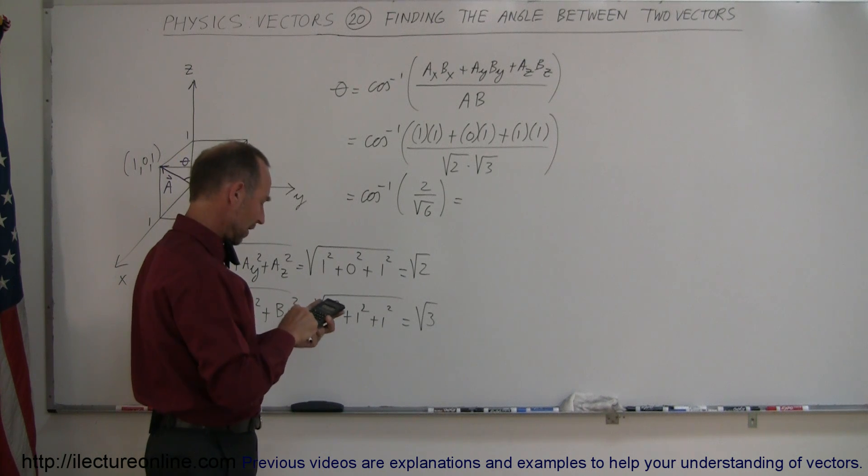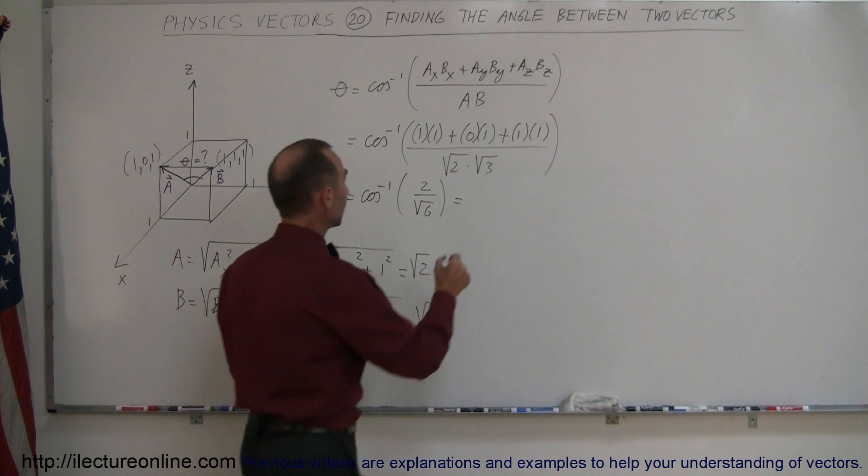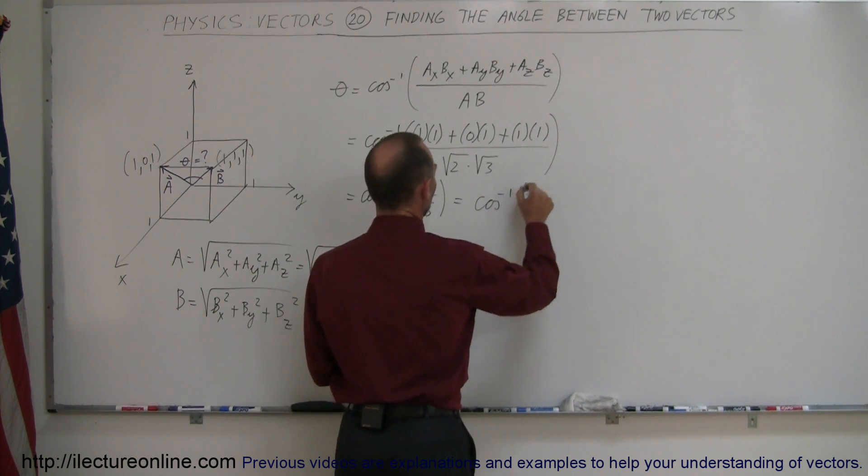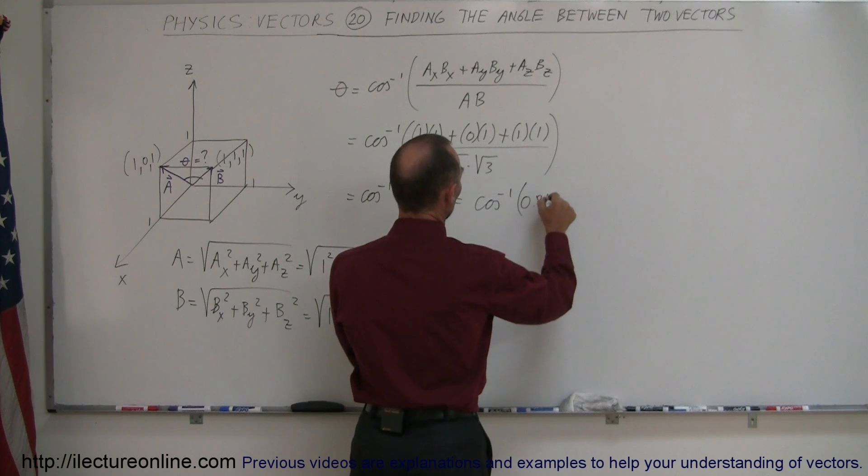So we have 2 divided by the square root of 6, which is the arc cosine of 0.8165.